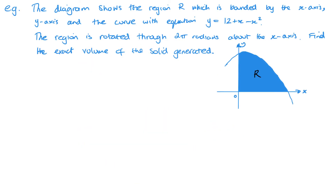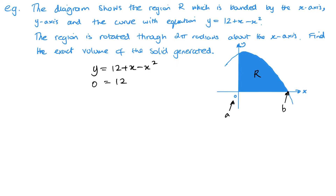Here's our first example. We've got region R, bounded by the x-axis, the y-axis, and the curve. It's then rotated through 2 pi radians about the x-axis. Find the exact volume of the solid generated. The first thing I need is my value of A, which is 0 in this case, but I also need the value of B. To find that, I make y equal to 0: so 12 plus x minus x squared equals 0, since that is where the curve meets the x-axis.